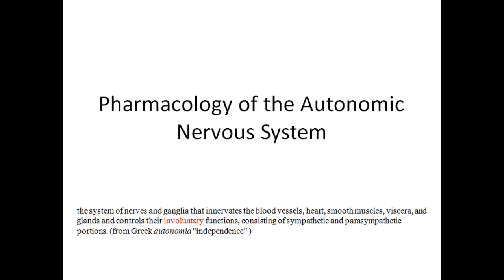Hello students. This is a lecture on the pharmacology of the autonomic nervous system. The autonomic nervous system is a system of nerves and ganglia that enervate the blood vessels, heart, smooth muscles, viscera, and glands and controls their involuntary functions, consisting of sympathetic and parasympathetic portions.